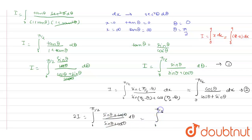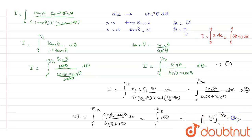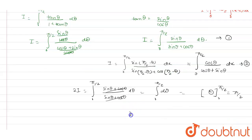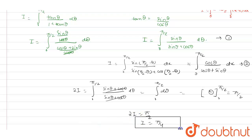The (sin θ plus cos θ) cancels out, leaving 2I equals integration from 0 to π/2 of dθ. The integration of dθ gives θ evaluated from 0 to π/2, which equals π/2. So 2I equals π/2, and therefore I equals π/4. This is our answer: I equals π/4.